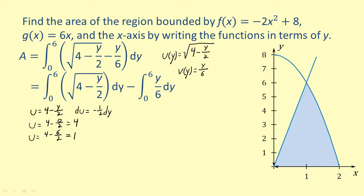Now let's write the integral in terms of u. Notice that dy is multiplied by negative one-half. To make sure the integral doesn't change in value, we must multiply by negative 2. So the equation for the area becomes negative 2 times the integral from 4 to 1 of u^(1/2) du minus the integral from 0 to 6 of y over 6 dy.